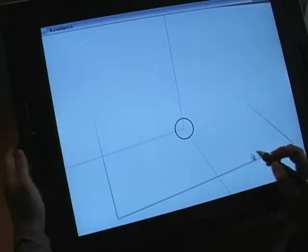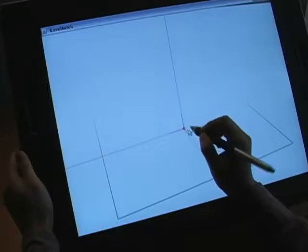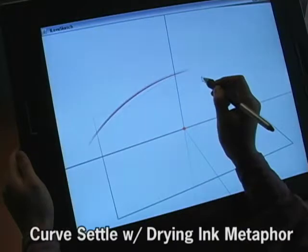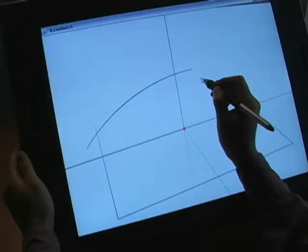The user can create NURBS curves by multi-stroke sketching. Each stroke is approximated by a cubic Bezier curve. The stroke curves settle automatically when time passes a certain period since the last stroke.